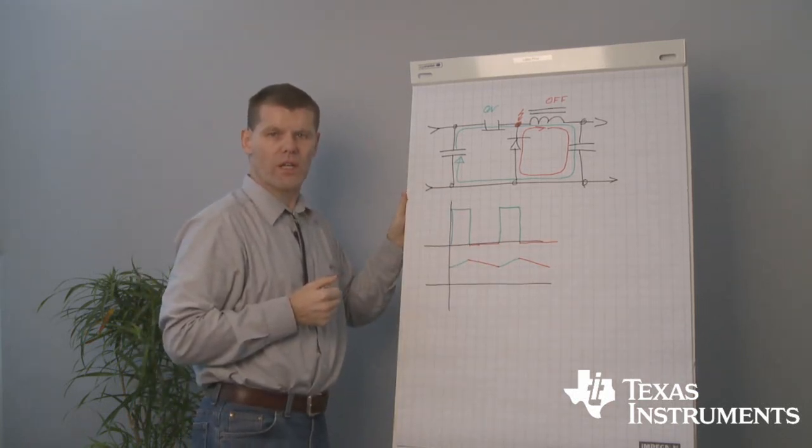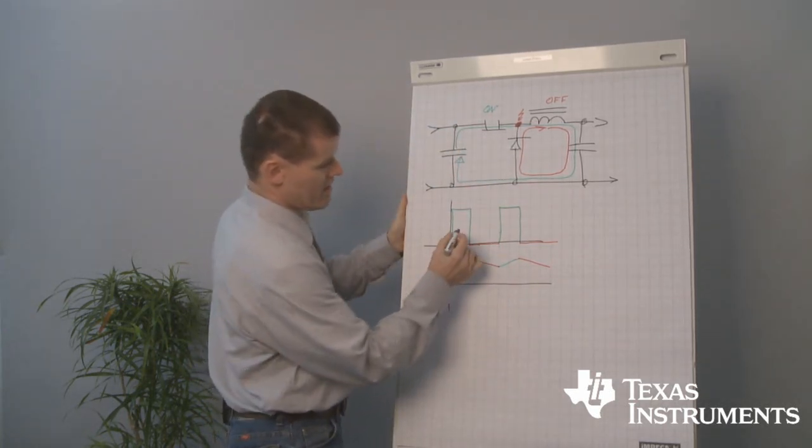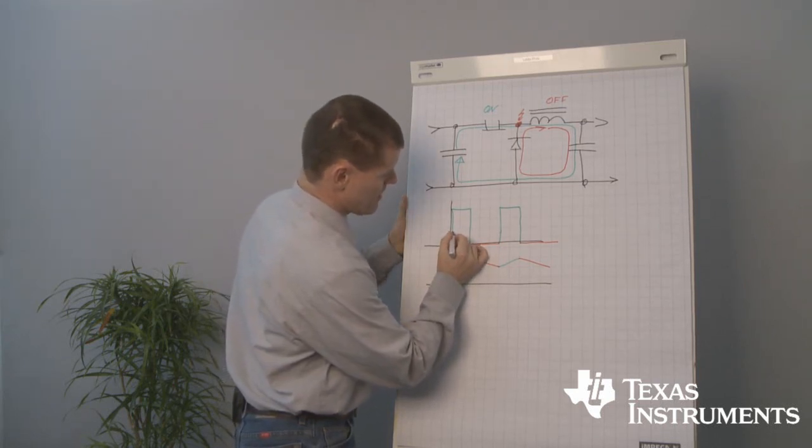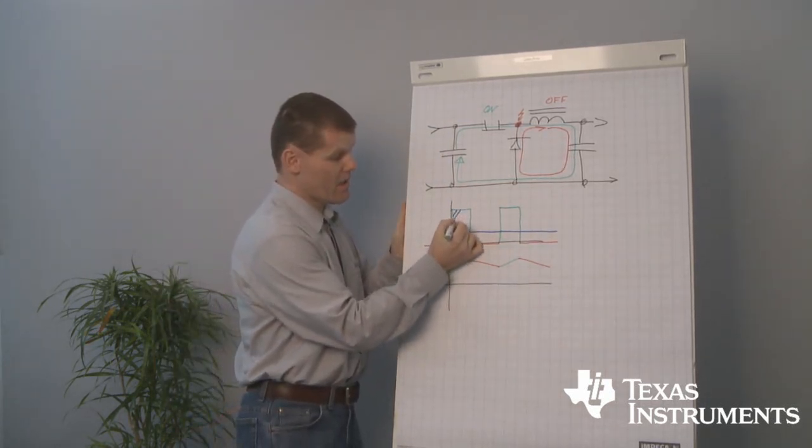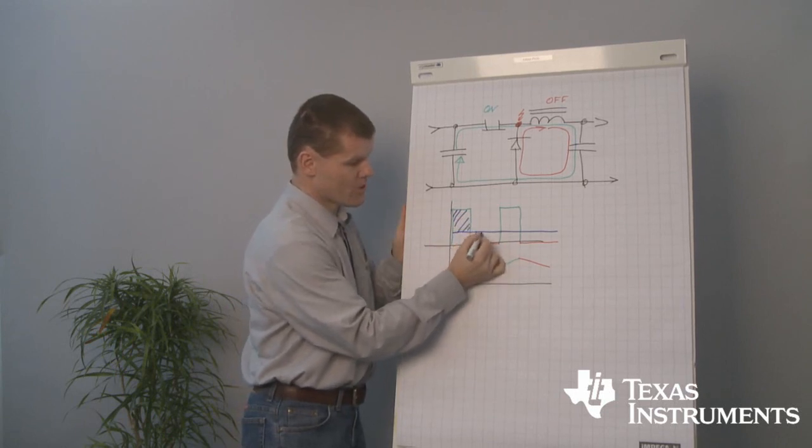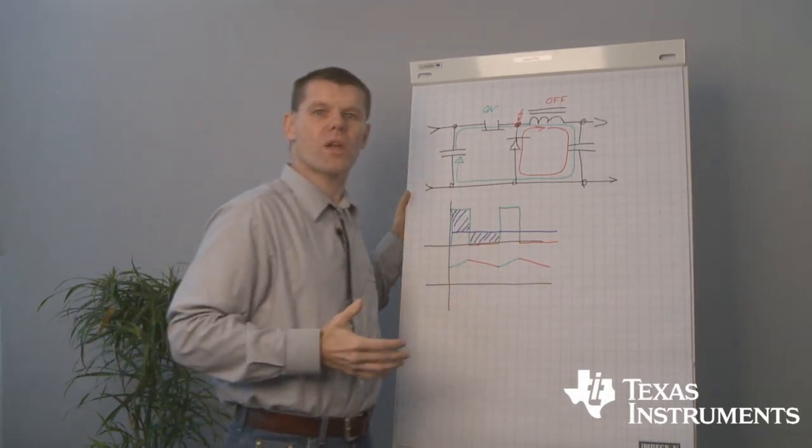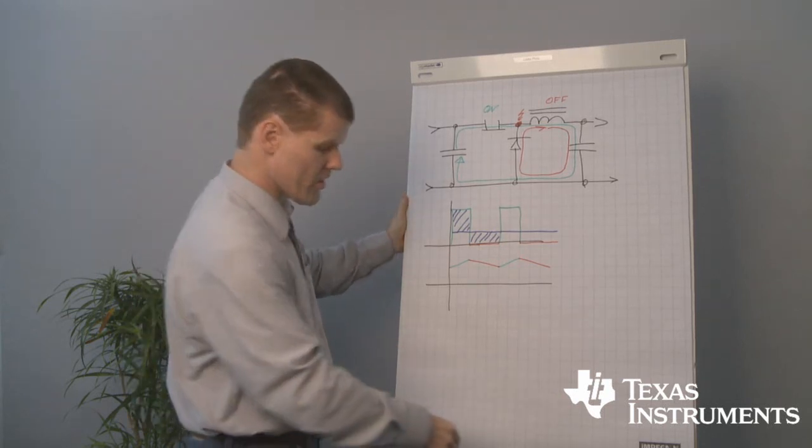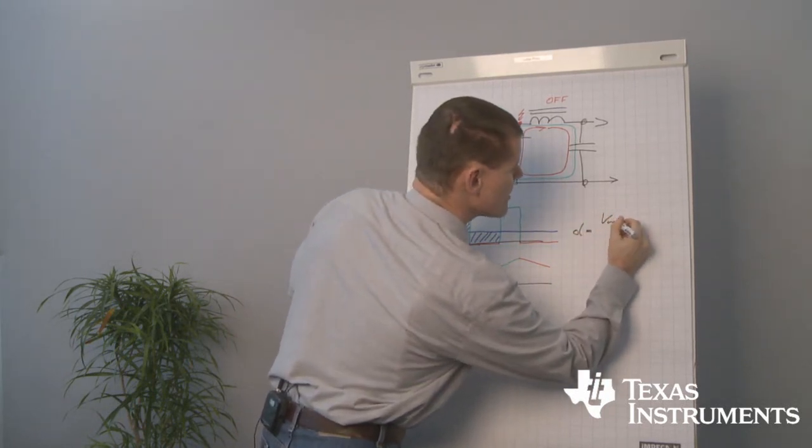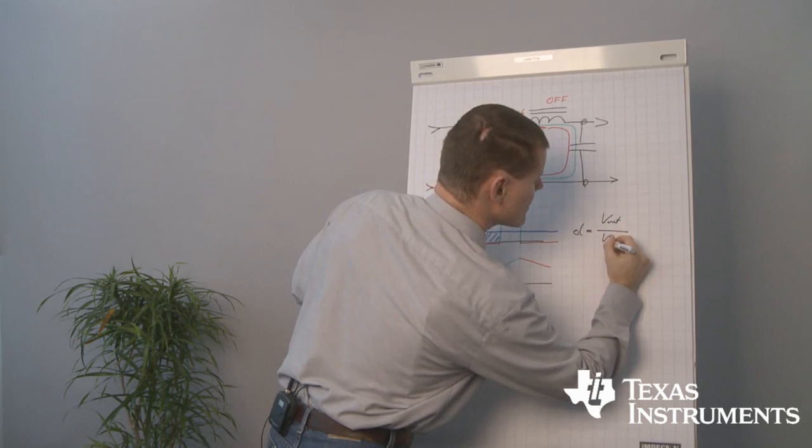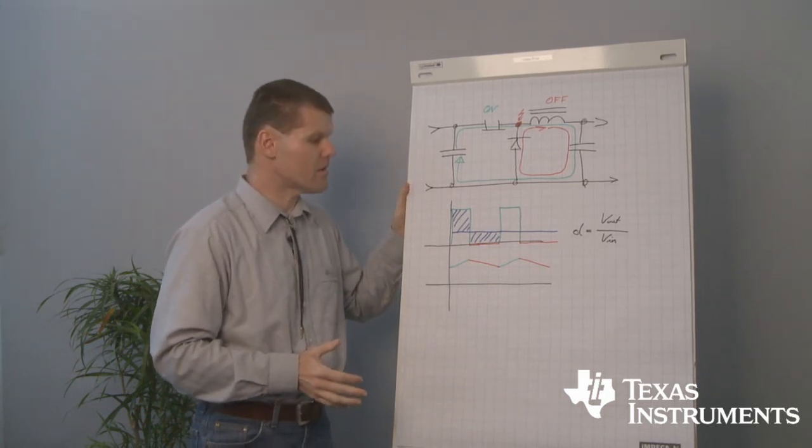But can we see the output voltage already? Yes, we can. Very simple. The output voltage in this converter is roughly like this, because this area has to match this area. And by this equation, we immediately know the duty cycle of the buck converter. It is output voltage divided by the input voltage. That's the duty cycle of our buck converter.